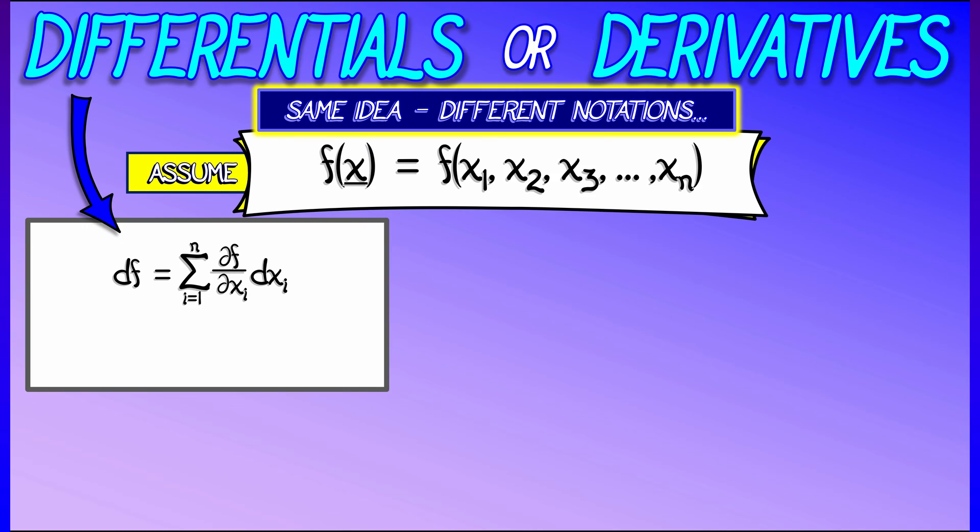as a linear combination of the dxᵢ terms, where the coefficients are the partial derivatives of f with respect to the various inputs xᵢ. So this linear combination of differentials can be thought of in terms of estimates.